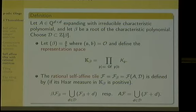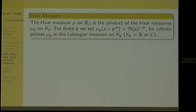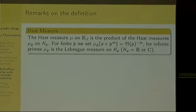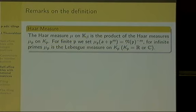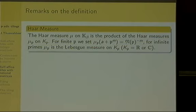To prove tile properties in the spirit of Lagarias-Wang, we need an analog of Lebesgue measure. We take the Haar measure on K_beta, which is the product of Haar measures on the factors. For the infinite primes — the Galois conjugates — we take the Lebesgue measure on R or C. For the finite primes P, we define the Haar measure mu_P such that the measure of P^m plus something equals the absolute norm of P to the power of minus n.